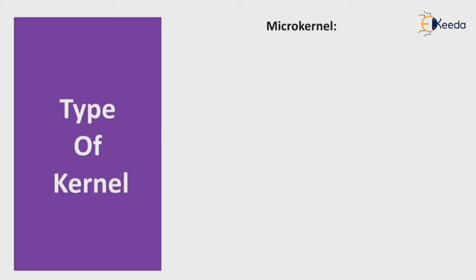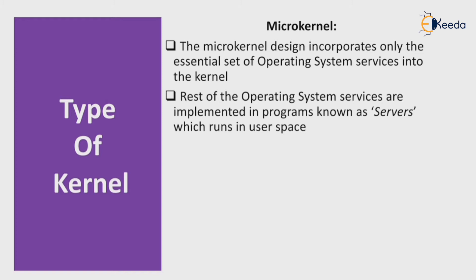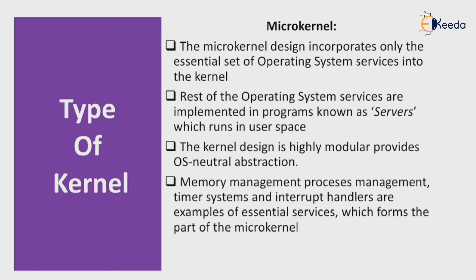The second type is the microkernel. The microkernel design incorporates only the essential state of the operating system. The rest of the operating system services are implemented in programs known as servers, which run in user space. The kernel design is highly modular and provides OS-neutral abstraction. Memory management, process management, timer system, and interrupt handler are examples of essential services performed as part of a microkernel.